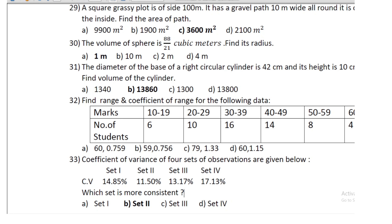Question 30: find the range and coefficient of range for the given data with class marks and number of students. Question 31: coefficient of variation for four sets of observations is 14.84%, 11.50%, 13.17%, and 17.13% respectively; set two is the most consistent.